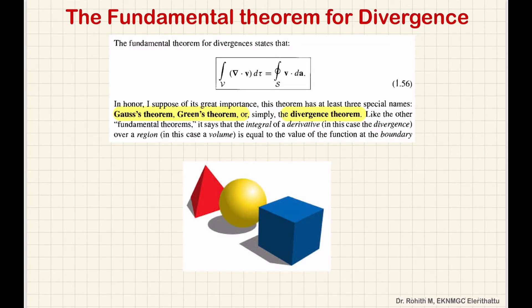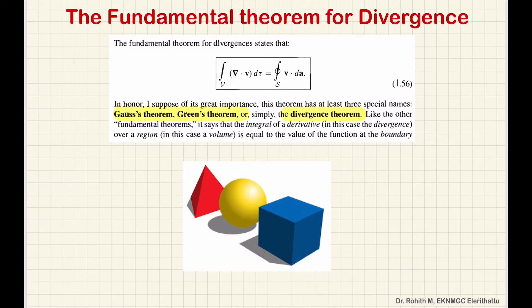We can consider any shape or any volume — there is no limitation to the shape of the volume. Suppose I am taking a spherical volume, just like a football in space. This is the boundary, the outer surface. The boundary is the surface.